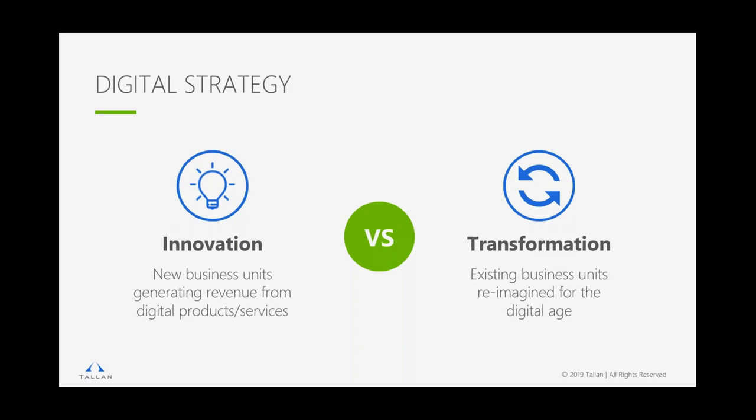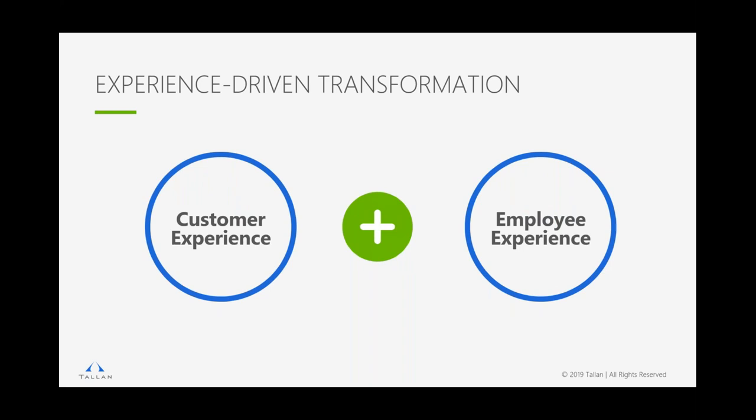Stick to that experience-driven transformation. Understand who it is you're trying to target. If you've got a great customer experience, you're going to get a lot of business, and you've got to have the staff that can handle it. When it comes to the employee experience, number one is efficiency — you can handle all that business or the wheels will come off the bus. Number two is that employees in cutting-edge organizations expect to use cutting-edge tools. Number three: you've got to recruit and retain employees just as you recruit and retain students.